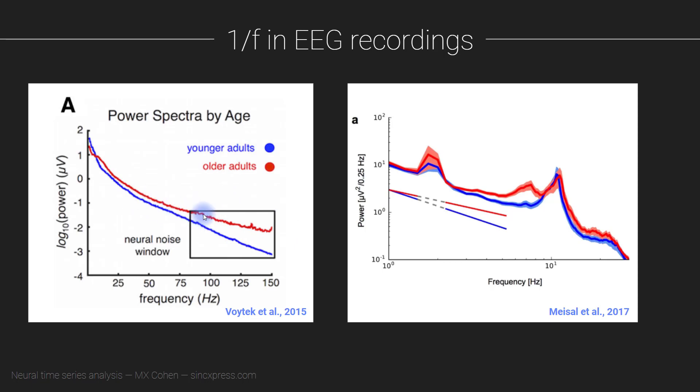But this is just two examples to show you that these kinds of 1 over F dynamics are actually related to various characteristics that people might be interested in, such as age. You can see comparing the temporal structure of EEG signals from young adults versus older adults, they primarily differ in the rate at which the energy decays over different frequencies, with older adults having a more shallow 1 over F.